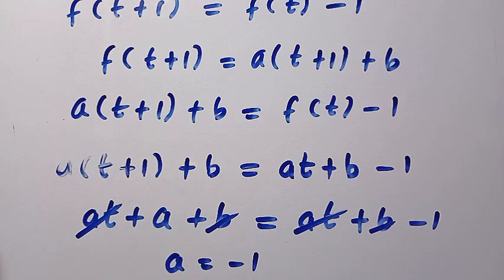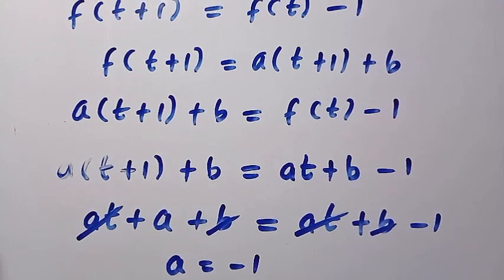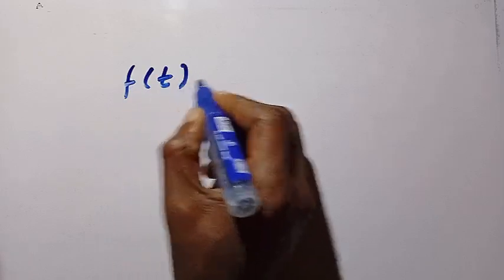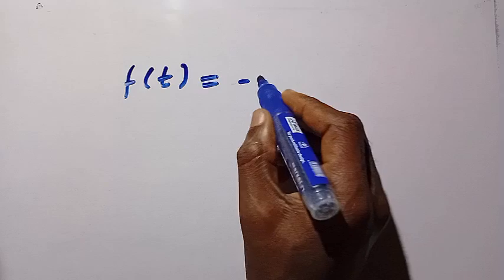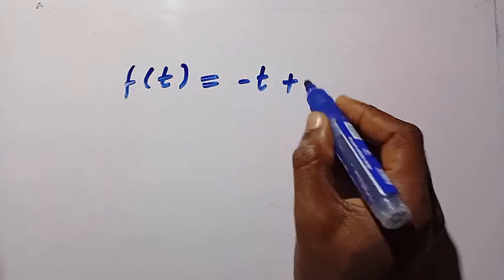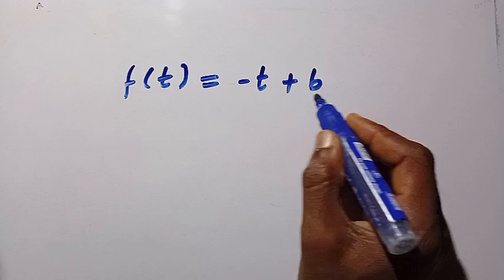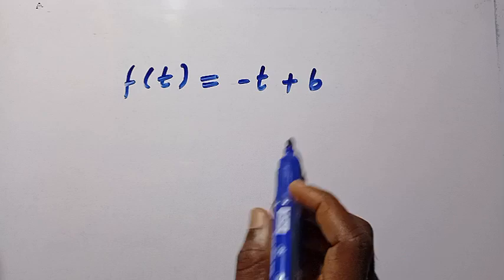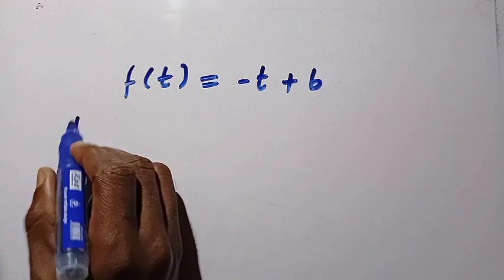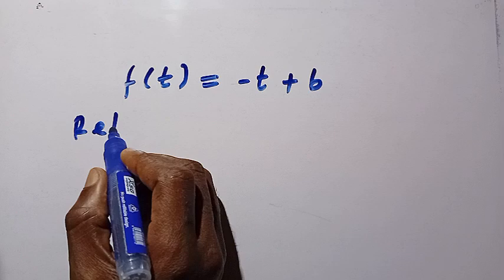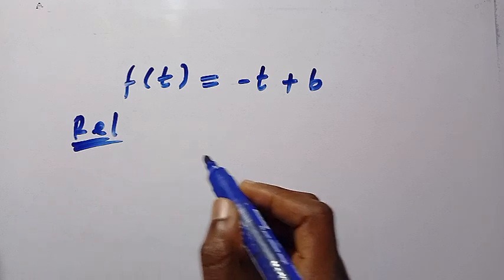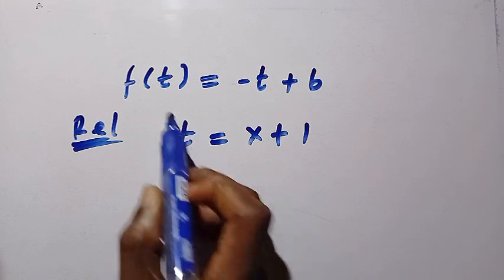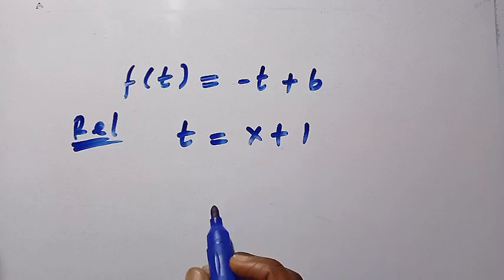Substituting a equals minus 1 back into the function f of t, we get f of t equals minus t plus b, where b is any constant real number. Now recalling that we let t equal x plus 1, let's replace every t with x plus 1.